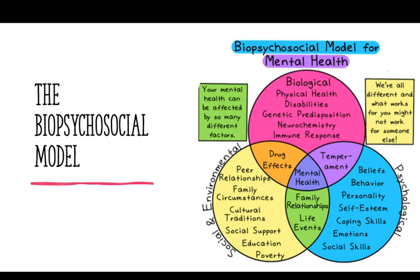As you can see in the diagram, there is overlap between each component. For example, the effect of drugs is biological due to its impact on the body and brain. However, drug use is also commonly linked to peer pressure or the social norms of an individual's friendship group. Family relationships influence people both socially and psychologically. Our level of intelligence is both biological and psychological.